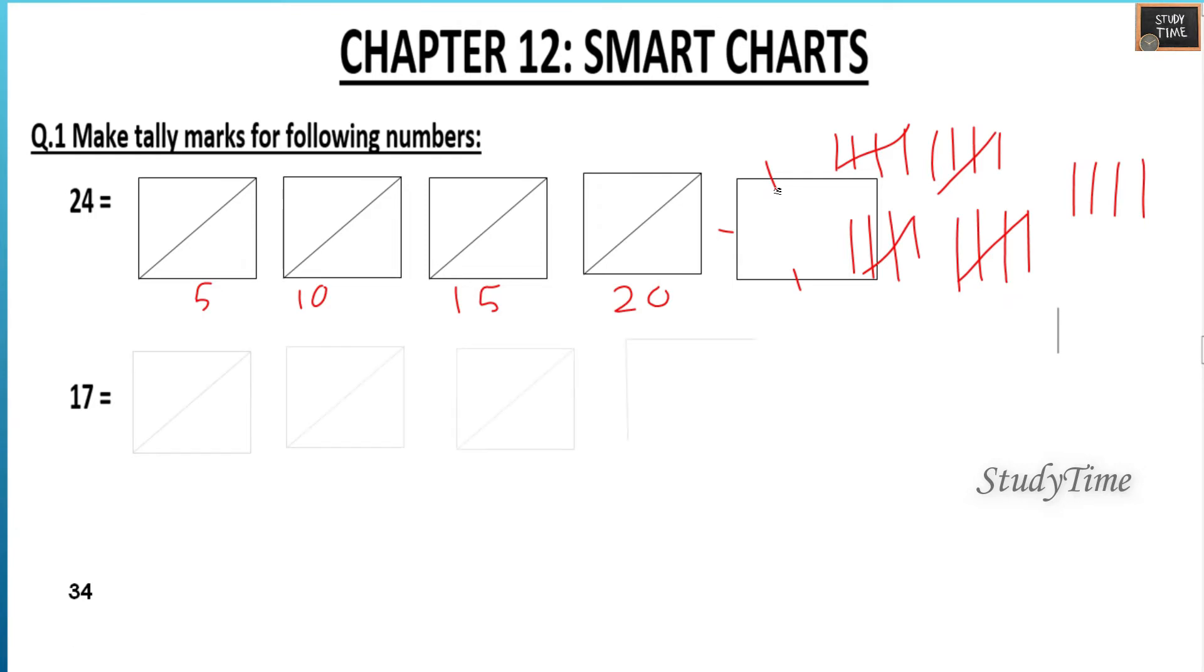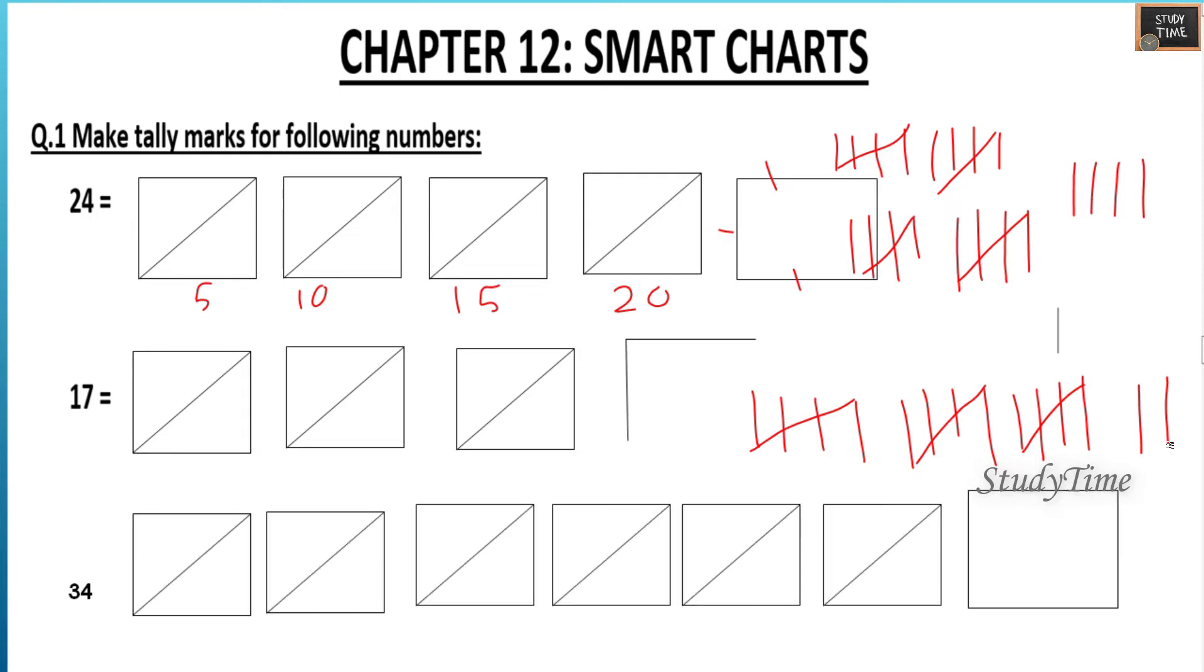Next is 17. You can represent like this also, or 1, 2, 3, 4, 5, 6, 7, 8, 9, 10, 11, 12, 13, 14, 15, 16, 17.